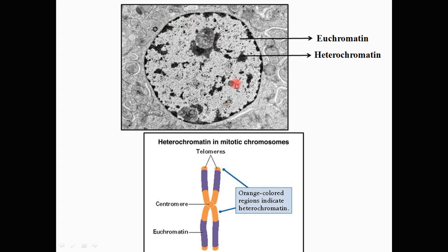Looking at this nucleus stained by nuclear dyes, you can see two kinds of regions: darkly stained regions called heterochromatin, and lightly stained regions called euchromatin. On a chromosome diagram, the centromeric region and regions near the centromere and telomere are orange-colored — these are the heterochromatic regions. The region between the centromere and telomere is the euchromatin, shown in purple.